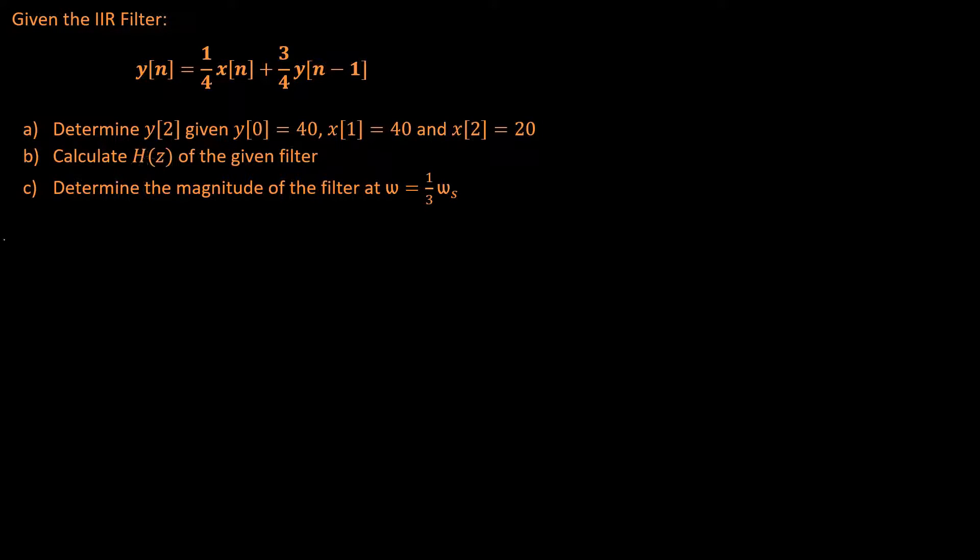For question A, determine y of 2. To calculate y of 2, we can start by simply substituting values in for our n value. For instance, we have x of 1 and we also have y of 0. We can substitute these two values into the system and calculate our y of 1.